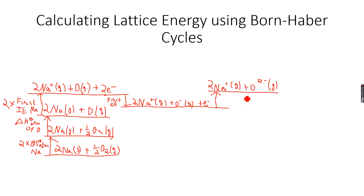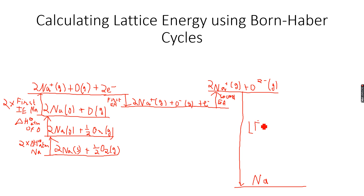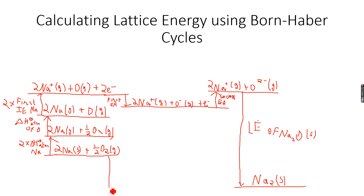We are now ready with all our ions. We label this the second electron affinity of oxygen, and then we go straight down to form Na₂O solid — this is the lattice energy of Na₂O. This is very exothermic because the arrow goes downward on the energy scale. We can also go directly down from the elements to get Na₂O solid, which represents the enthalpy of formation — I forgot to write the O here, so I'll add it now.